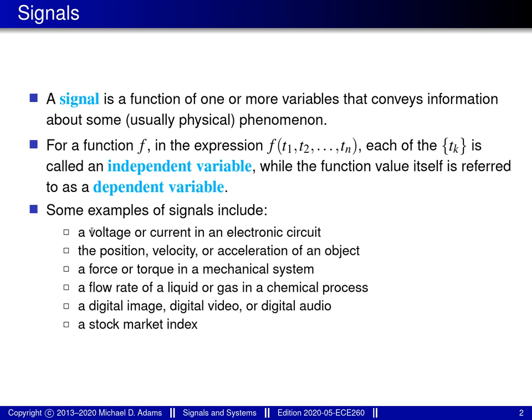A few examples of signals are things like voltages and currents in an electronic circuit; positions, velocities, accelerations, forces or torques in a mechanical system; flow rates of liquids or gases in some kind of chemical process. Even things like digital images, digital video, digital audio, and stock market indexes — all of these things can be considered to be signals.